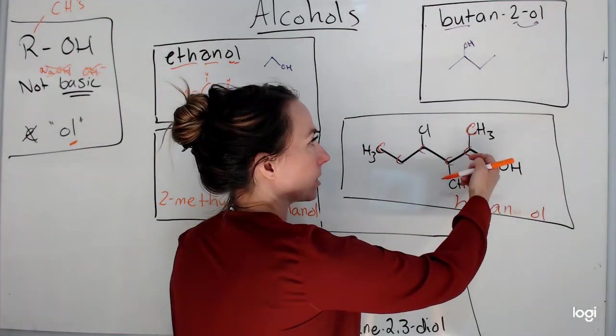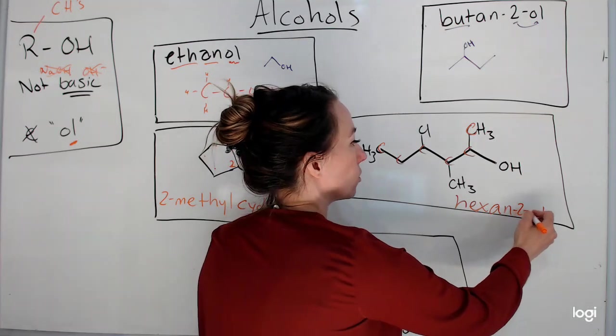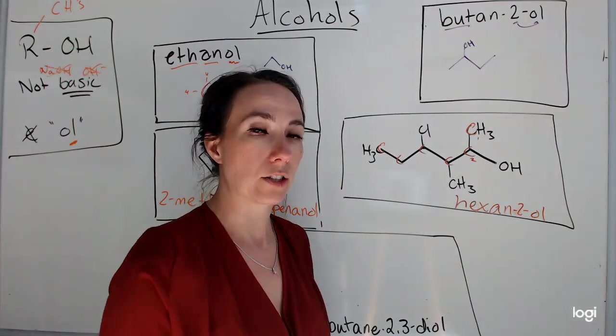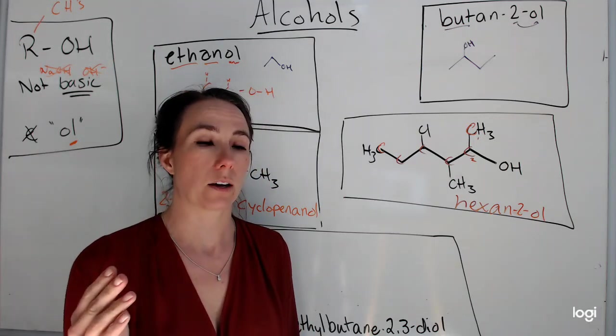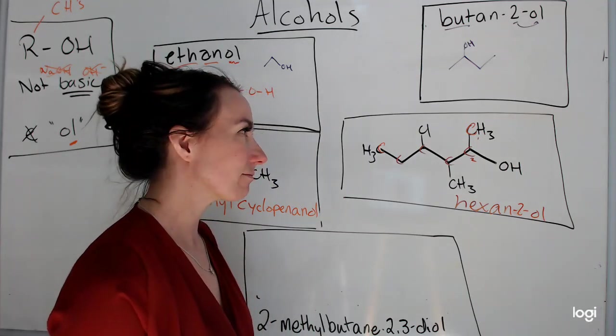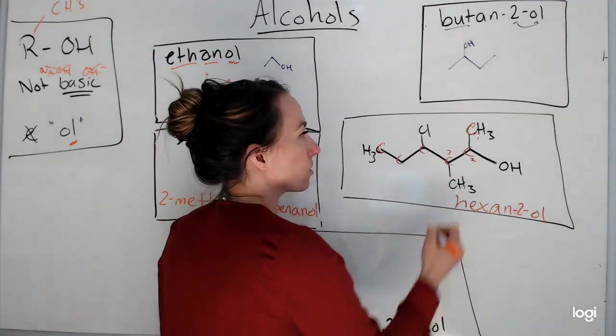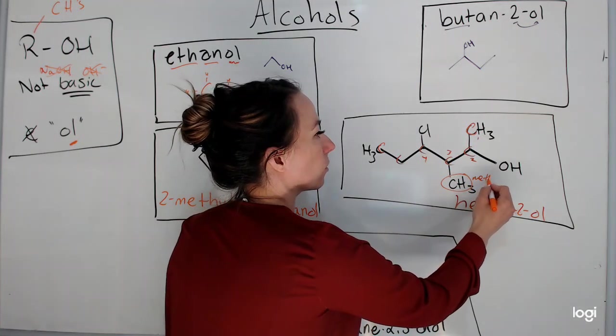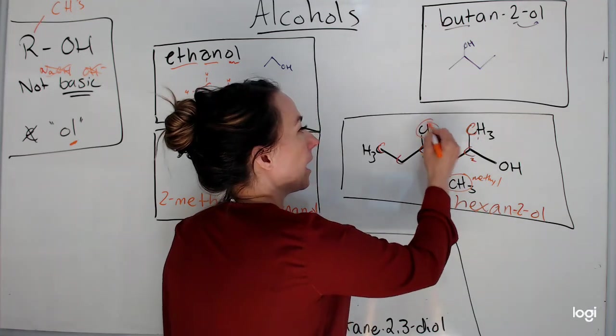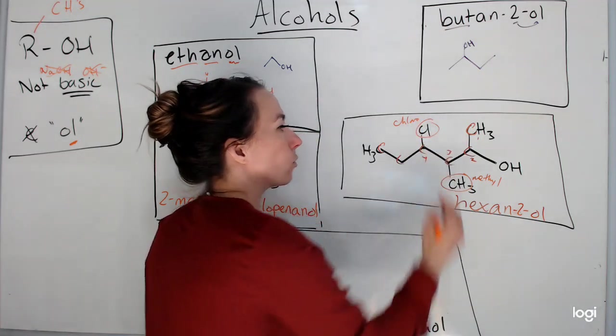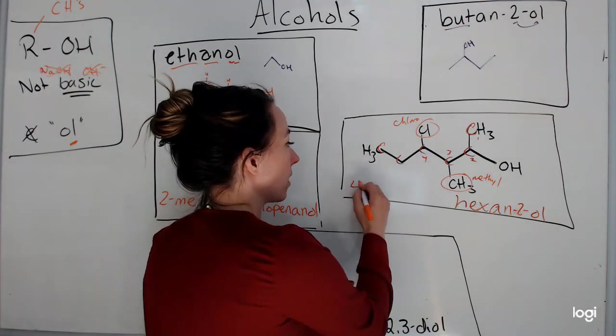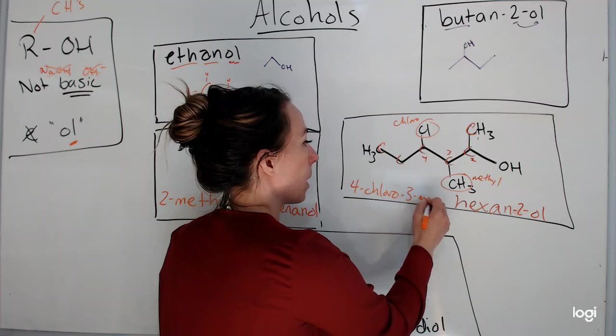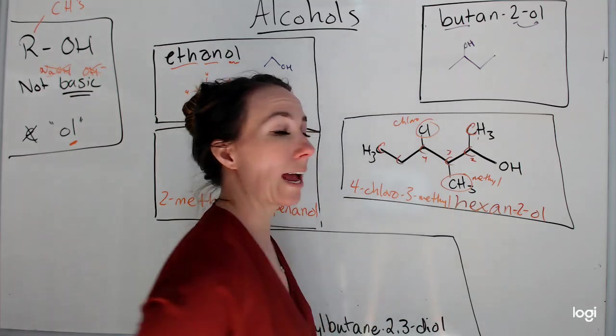And that alcohol is going to be attached to carbon 2 because I'm going to number them 1, 2, so that my OH is on the lowest carbon. That makes this 3, that makes this 4. So this is a methyl group off of carbon 3, and this is a chloro group off of carbon 4. Chloro comes first in the alphabet. So 4-chloro-3-methylhexan-2-ol.